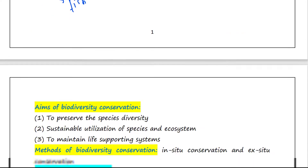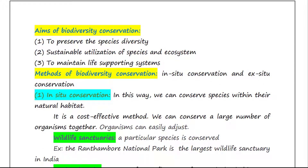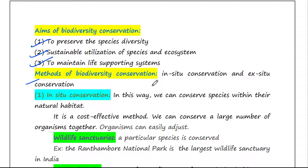Now let's talk about the aims of biodiversity conservation. In order to protect our biodiversity, we need to conserve it. Biodiversity conservation has three main objectives: to preserve species diversity, sustainable utilization of species and ecosystems, and to maintain life-supporting systems.